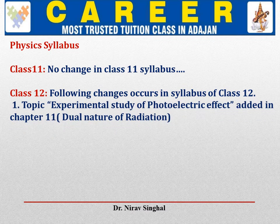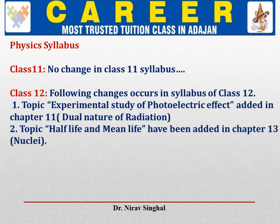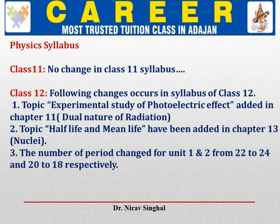First, the topic Experimental Study of Photoelectric Effect has been added in Chapter 11, Dual Nature of Radiation. Second, the topics Half-Life and Mean Life have been added in Chapter 13, Nuclei. Third, the number of periods for Unit 1 and Unit 2 have changed from 22 to 24 for Unit 1 and 20 to 18 for Unit 2 respectively. So these are the three major changes in the syllabus of Class 12 Physics — two new topics added and a change in the number of periods for Unit 1 and Unit 2.